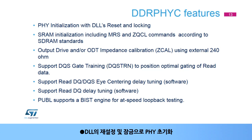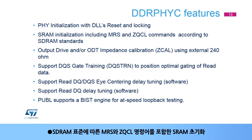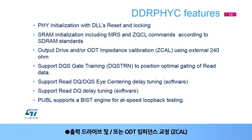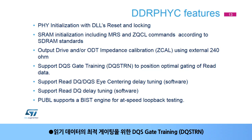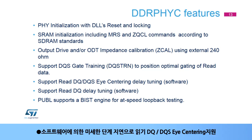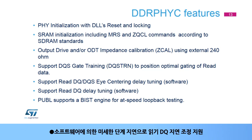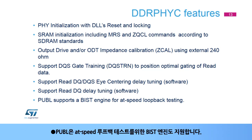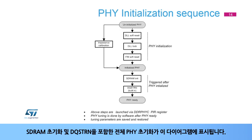This is a summary of the DDRPHYC features: PHY initialization with DLL reset and locking; SDRAM initialization including MRS and ZQCL commands according to SDRAM standards; output drive and ODT impedance calibration, or ZCAL; DQS gate training, or DQSTRN, to position optimal gating of read data; support for read DQ-DQSI centering with fine-step delay by software; support for read DQ delay tuning with fine-step delay by software. PUBL also supports a BIST engine for at-speed loopback testing. The complete PHY initialization, including SDRAM initialization and DQSTRN, is shown in this diagram.